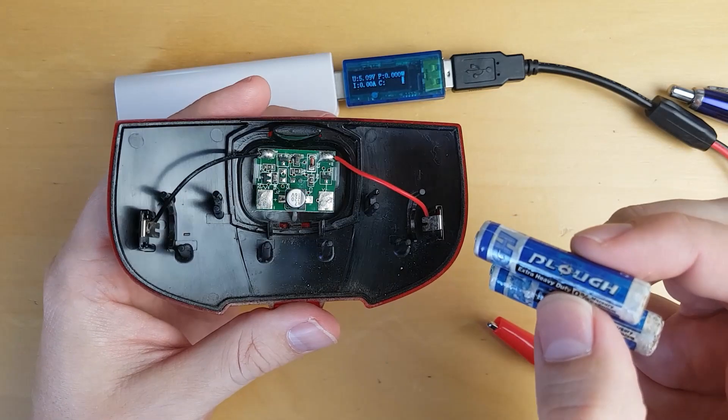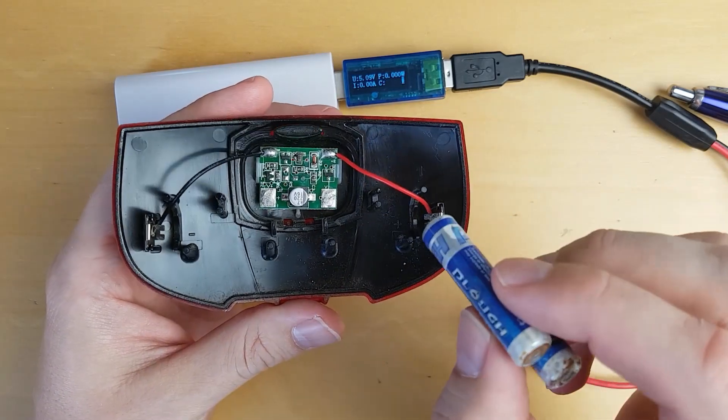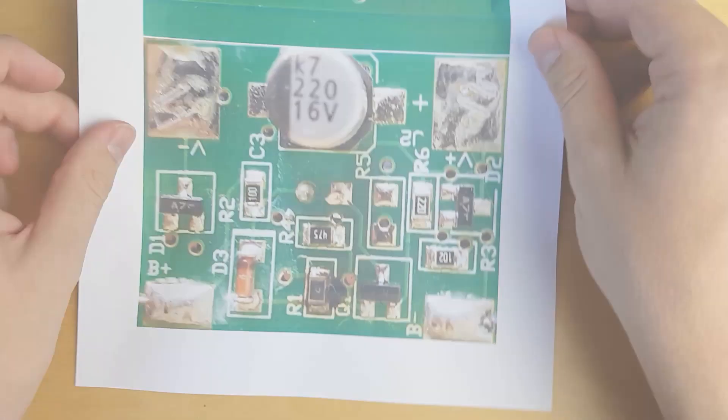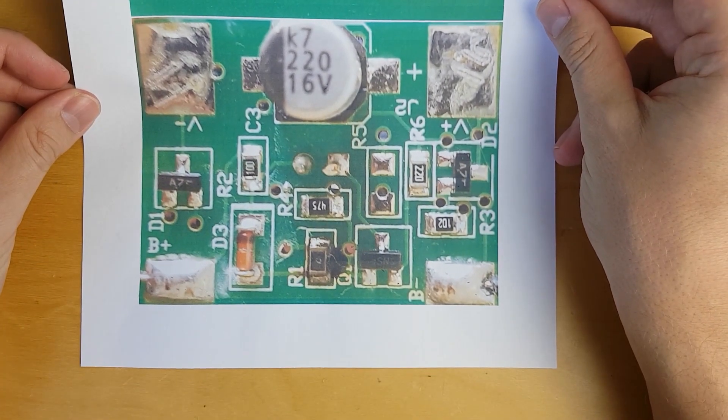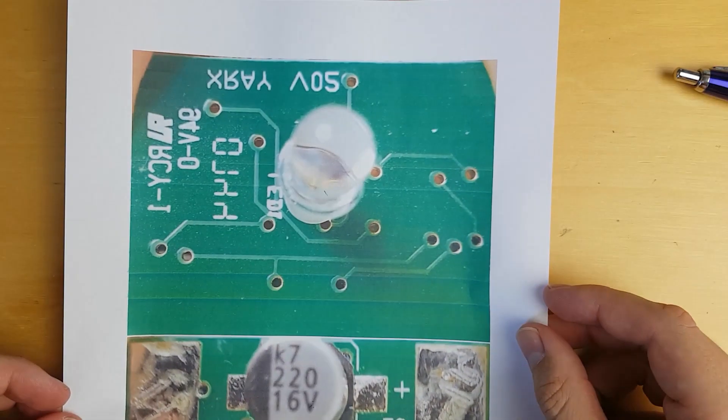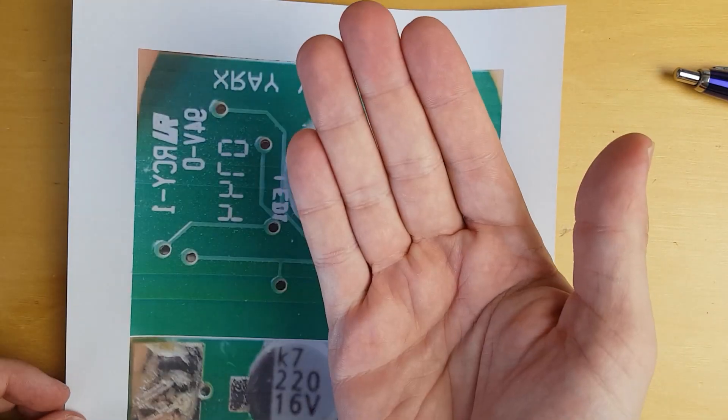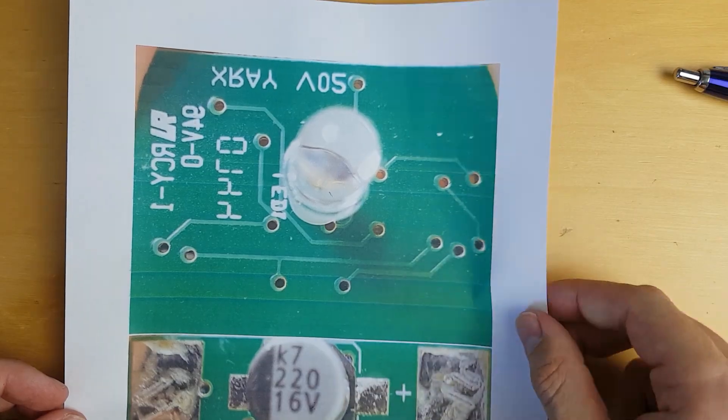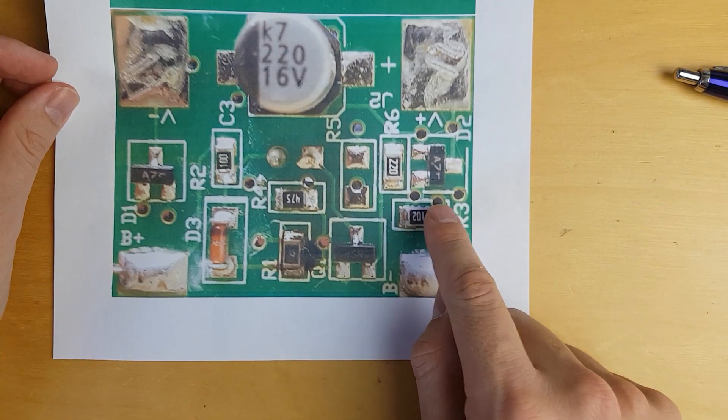So here we have the circuit board - one side and the other with the LED, but flipped. So these three holes correspond to these three holes. If you want to reverse engineer it yourself, you can do so.